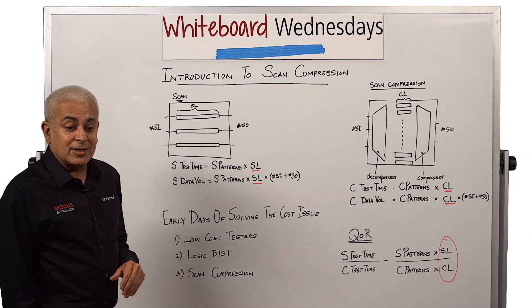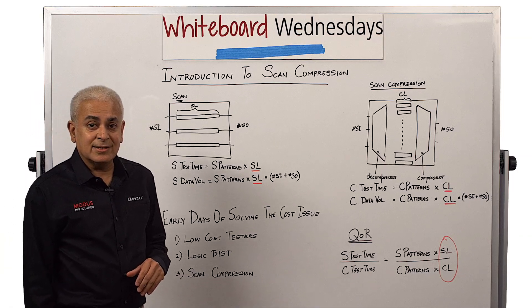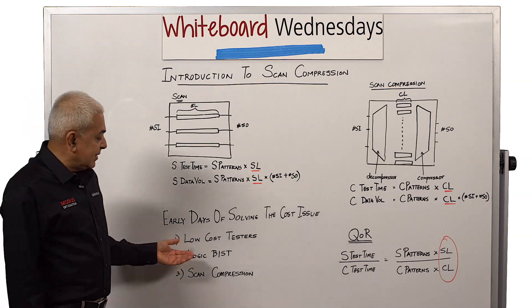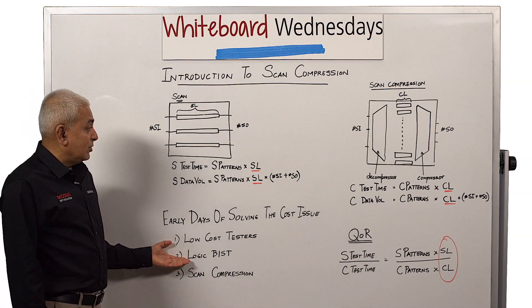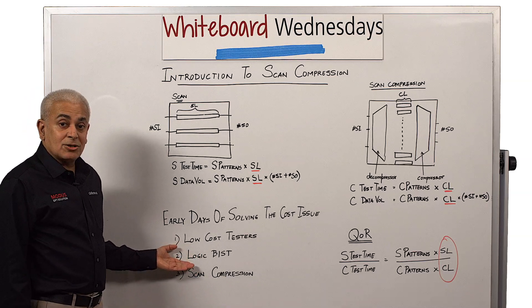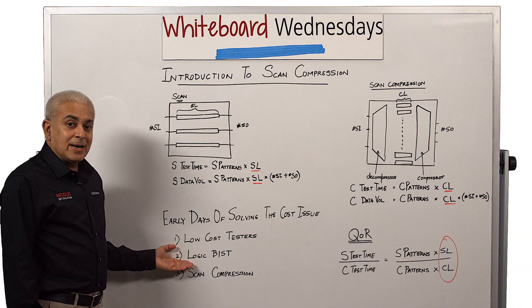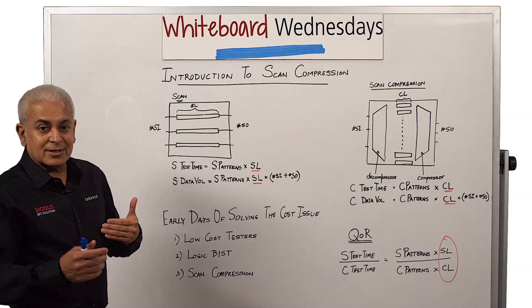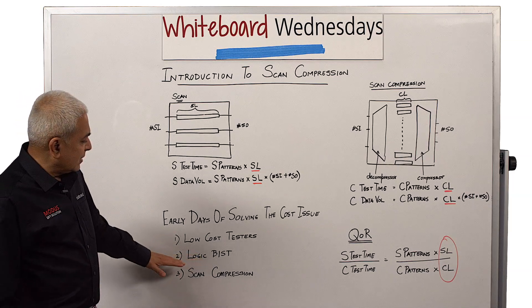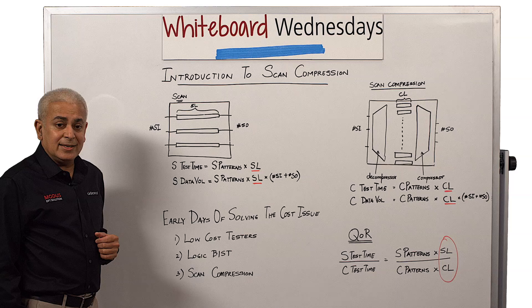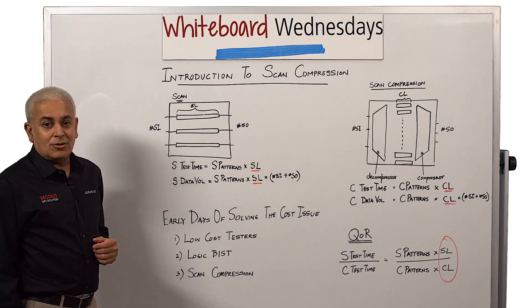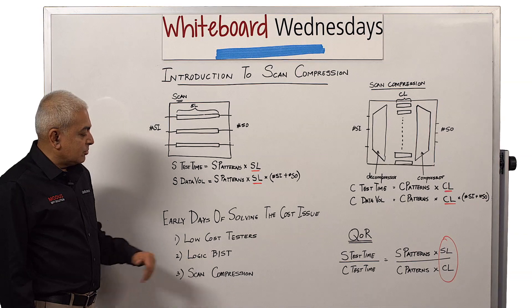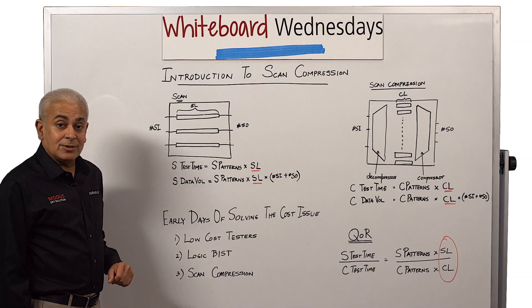LogicBIST was a solution which was available in those days. It was also known as a tester-on-chip. It represented having zero data volume, meaning you generate all the patterns on the chip itself, but the patterns were all random, and hence it took longer to test the device. LogicBIST flows also required exhaustive cleaning of the design, which was very difficult to do for any average design. So LogicBIST also was unsuccessful for those reasons.